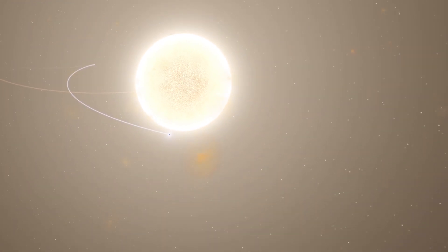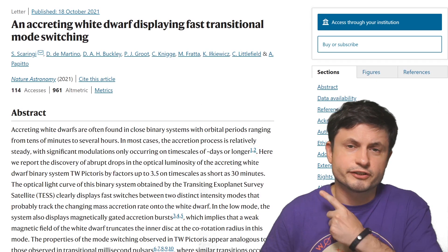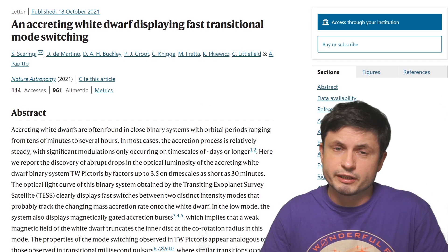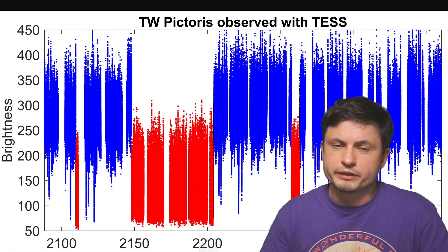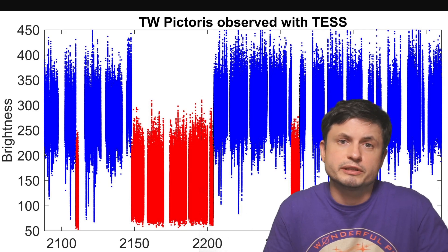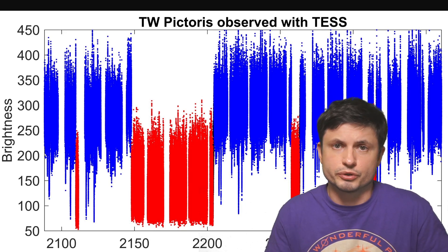It does have some sort of a partner. And specifically we're going to be discussing this study right here that has recently discovered something really unusual about this star system. The white dwarf in this case exhibits a phenomenon that has only been previously seen in different types of neutron stars.